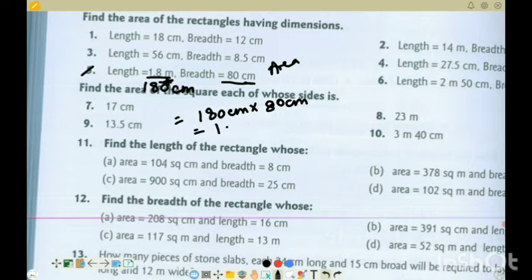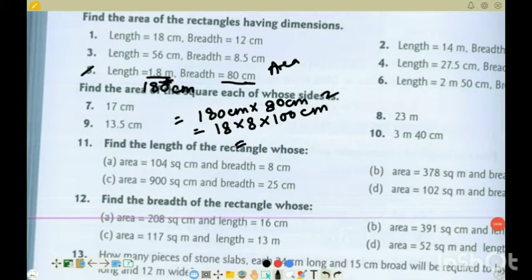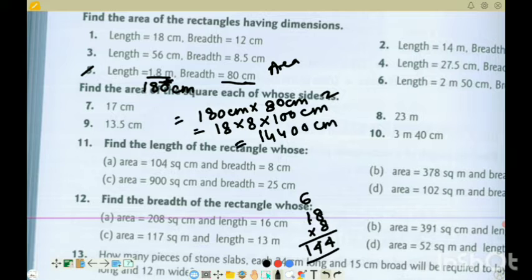So this area, now I will calculate. Area will be equal to 180 into 80 centimeter. We can rewrite this as 18 into 8 into 100 centimeter square. Centimeter into centimeter equals centimeter square. So 18 into 8, which is how much? 8 times 8 is 64, and 8 times 1 is 8, and 6 is 14. 144. So 144 times 100 equals 14,400 centimeter square. This is the area.